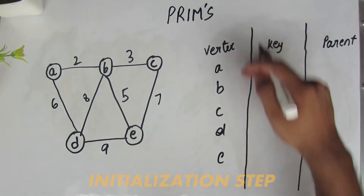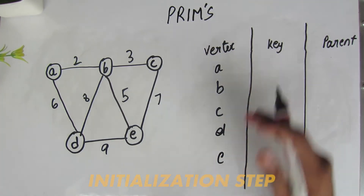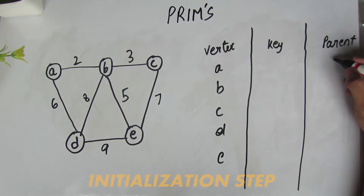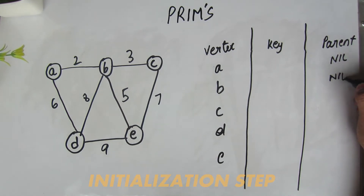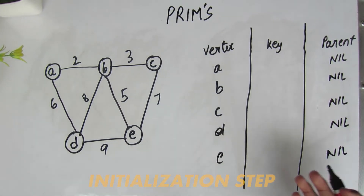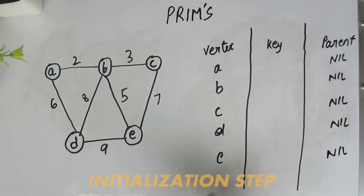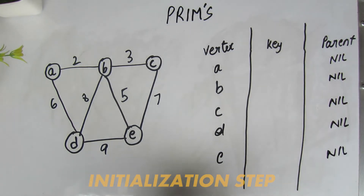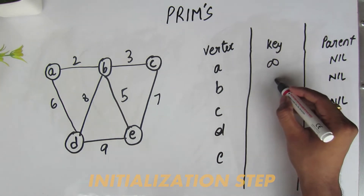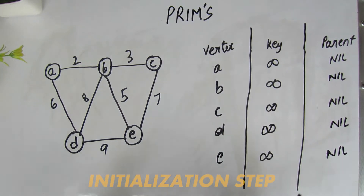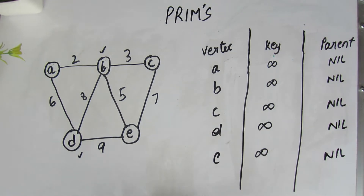This table has three columns. Let's fill this as the initialization step. We push all vertices into the heap. At the initialization step we do not know which vertex is parent of what, so we assign each vertex's parent as null. We also assign each key the largest possible value, which theoretically can be infinity. So we are done with the initialization step.